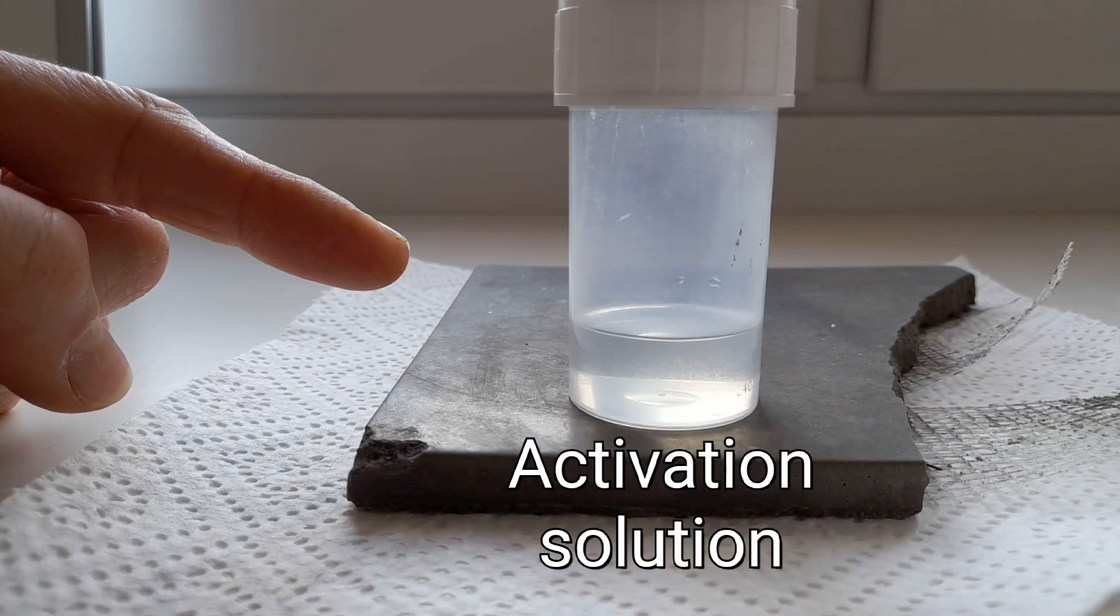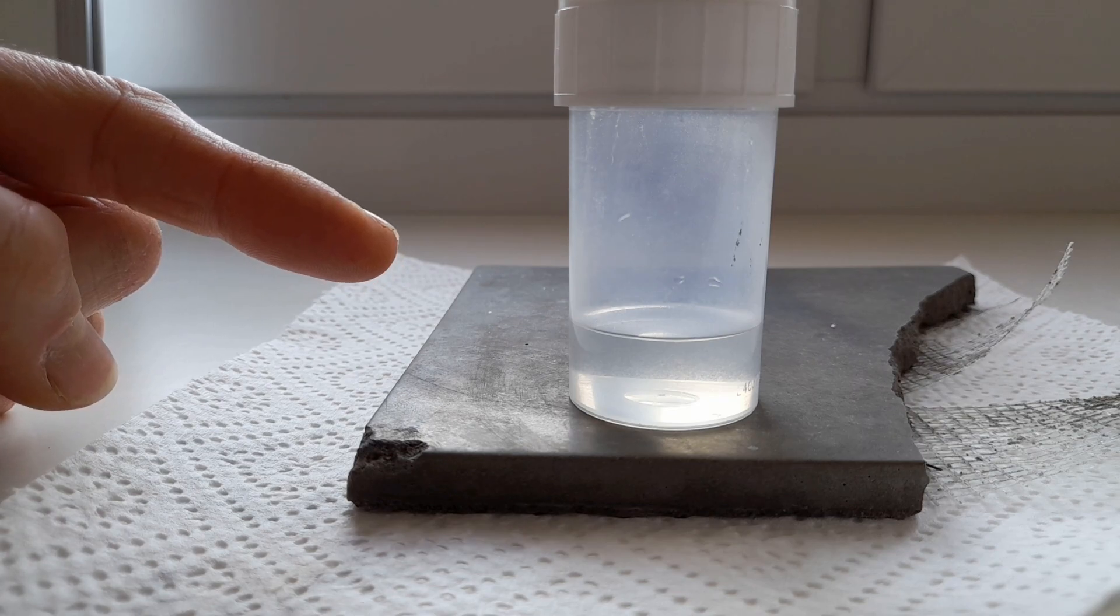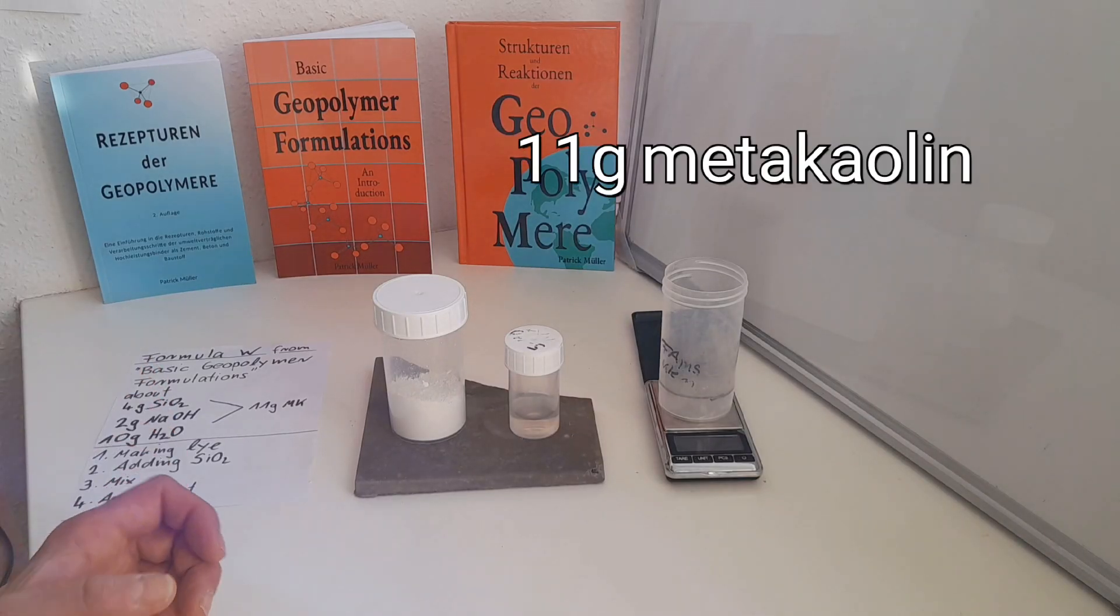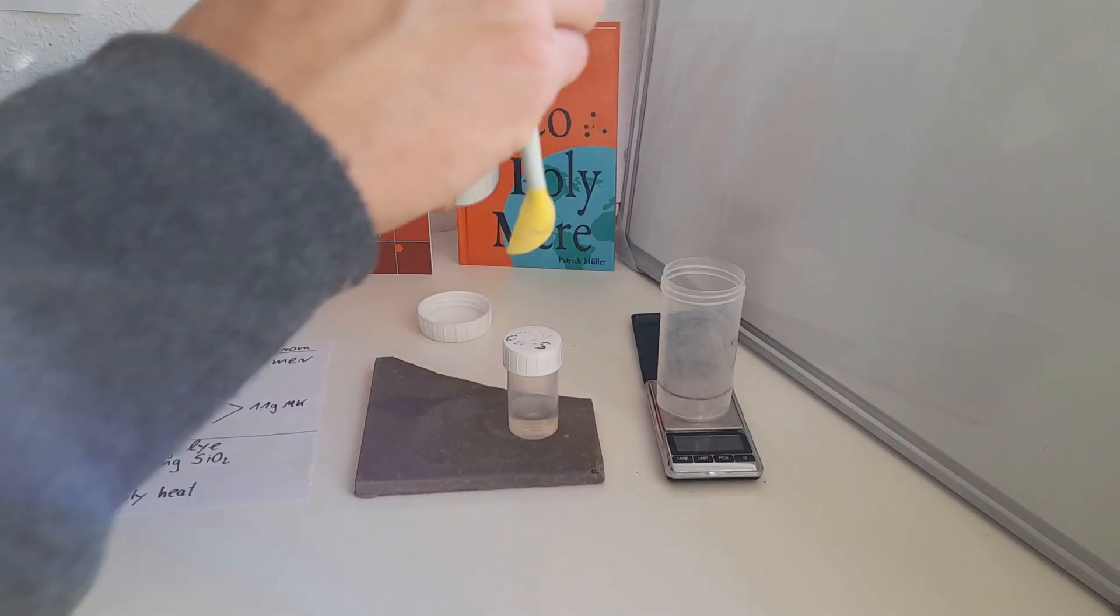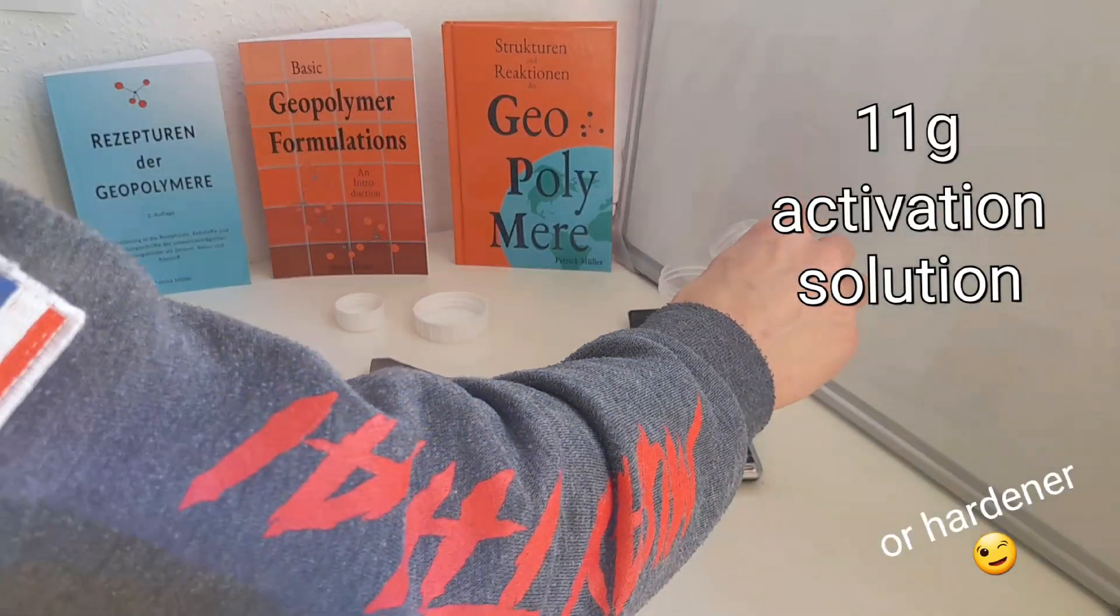This is our solution and now we mix our geopolymer. I fill in 11 grams of metakaolin, add the activation solution to it, and we give it a good mix.